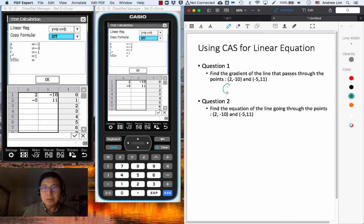equals to minus 3. Okay, now find it. So let's look at the next question. Find the equation of the line going through the points minus 2 comma minus 10 and minus 5 comma 11, and we are using the same two points. If it is another two points, you go through the same process in finding the gradient.